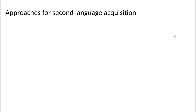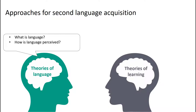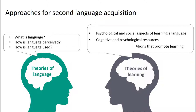Research into second language acquisition has been informed by two kinds of theories: the theories of language and the theories of learning. The theories of language focus on explaining what language is, how it is perceived, and how it is viewed. While theories of learning aim to explain the psychological and social aspects of learning and language, the cognitive and psychological resources involved, and the social contexts and conditions that promote learning.